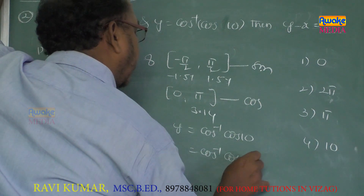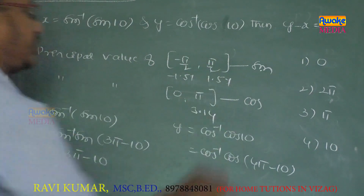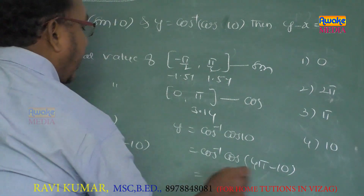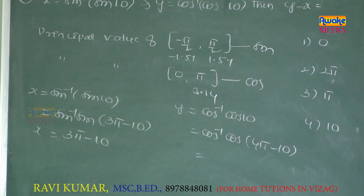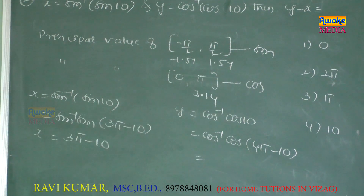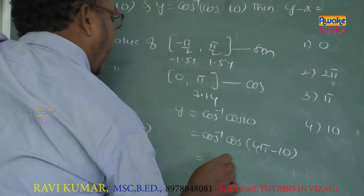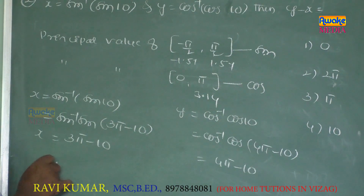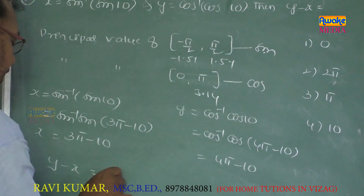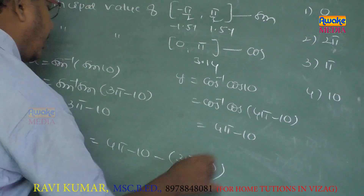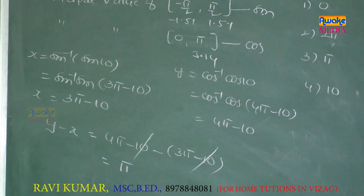For y = cos⁻¹(cos 10), we write cos⁻¹(cos(4π - 10)). Since 4π ≈ 12.56, 4π - 10 = 2.56, which lies in [0, π]. So y equals 4π - 10. Therefore y minus x = (4π - 10) minus (3π - 10) = 4π - 3π = π. The third option is the answer.